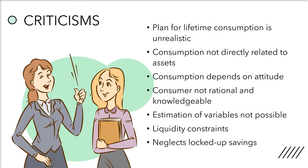Finally, the theory neglects the role of locked up savings in consumption. It regards savings as a pool from which people spend on consumption over the lifetime. In fact, people keep their savings in locked up form in mutual funds, pension plans, life insurance, etc. So the theory has not considered all these factors. But on the whole, the life cycle hypothesis is more superior to the other hypotheses on the consumption function.